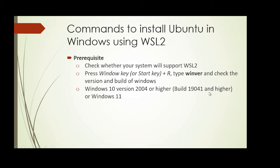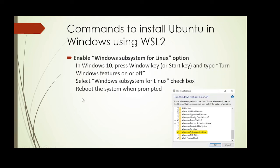Please ensure the Windows you use supports WSL2 before moving to the next step. Once we've verified the prerequisites, we need to enable the Windows Subsystem for Linux feature. In the Windows search bar, type 'Turn Windows features on or off' and open the Windows Features window. Then select the Windows Subsystem for Linux checkbox at the bottom of the window and click OK.